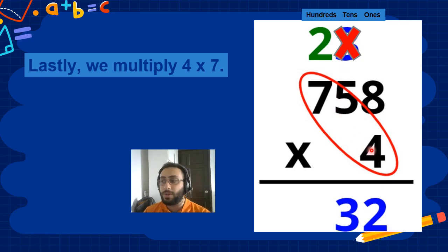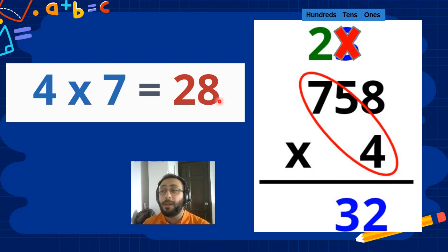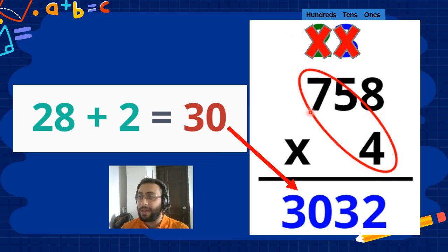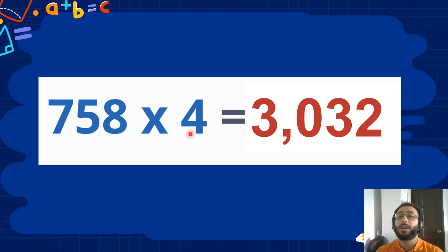So next one is very easy. 4 times 7, whatever the answer, plus 2. So 4 times 7 is 28. Are we finished? No. 28 plus 2 is 30. Now we write 30 here. We don't have any more digits, so we are finished. So the answer to 758 times 4 is equal to 3,032.